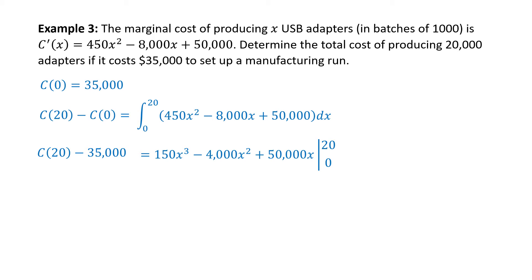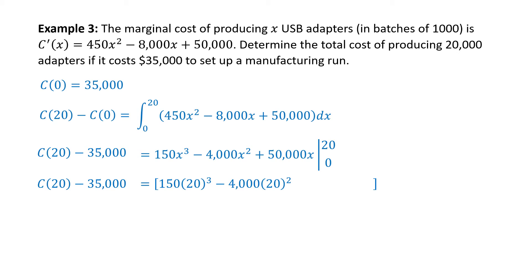Now integrate 8,000x. The integral of x is 1 half x squared, so 1 half times 8,000 gives 4,000x squared. Plus the antiderivative of 50,000, which is 50,000x. We evaluate this from 0 to 20. We begin by substituting 20 for every x: 150 times 20 cubed minus 4,000 times 20 squared plus 50,000 times 20. The lower limit of integration, which is 0, results in 0.